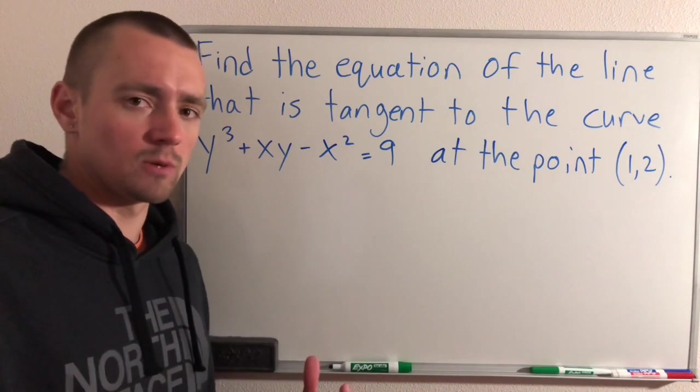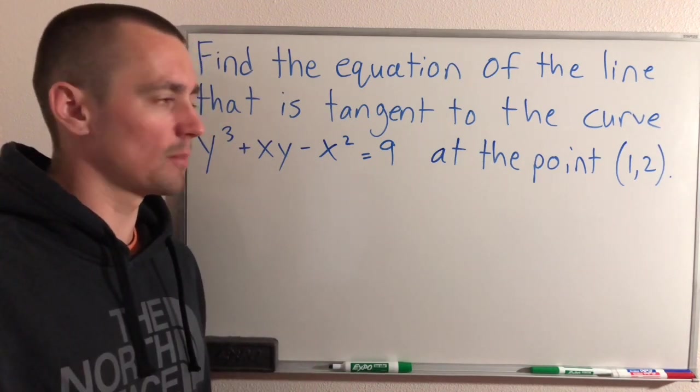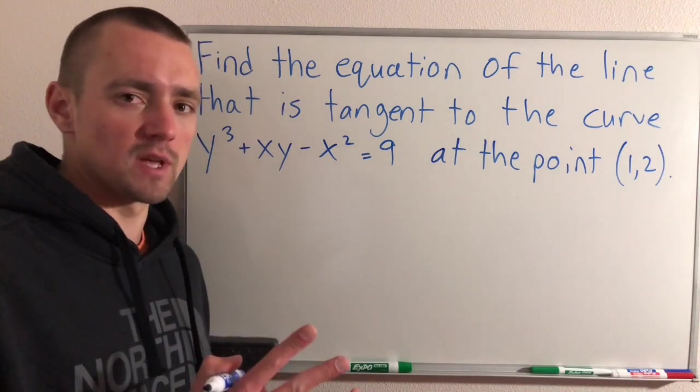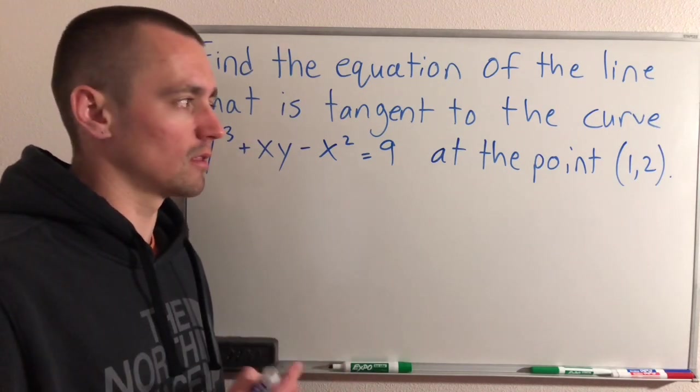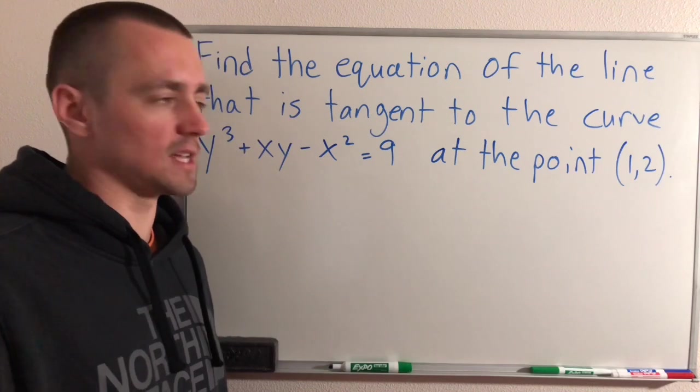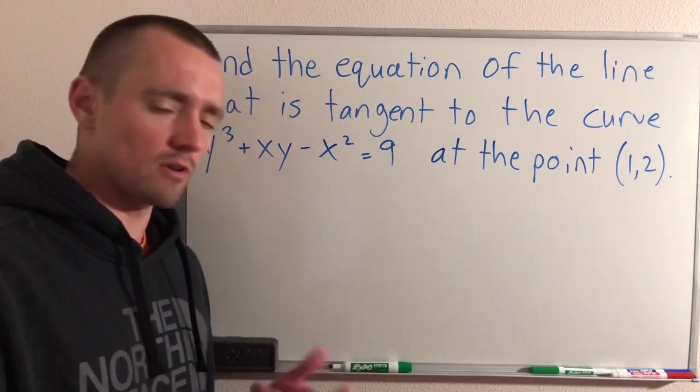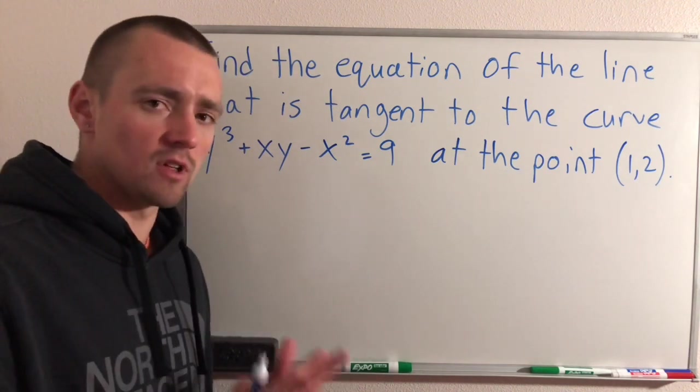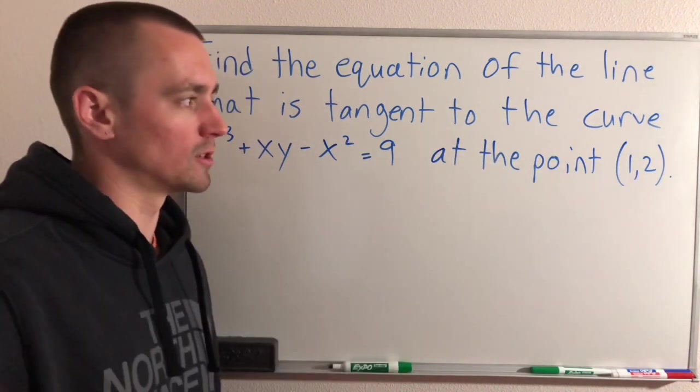So just like we did with our other videos about tangent lines, we need to check two things basically in order to make sure that the linear function that we're coming up with is a tangent line at that point. First of all, we need to make sure that our line has the same slope as this curve at that point. And second of all, it needs to go through that point (1,2).